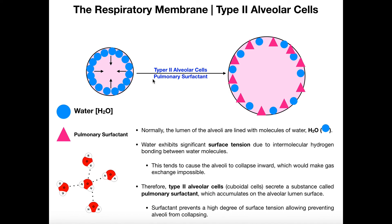So you have to give pulmonary surfactant to allow the alveoli to expand, or at least to prevent them from collapsing. Hopefully this made sense — it's a pretty straightforward topic, and now you understand a little bit about type 2 alveolar cells.